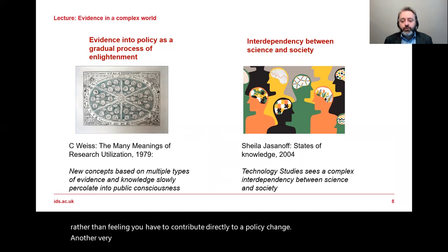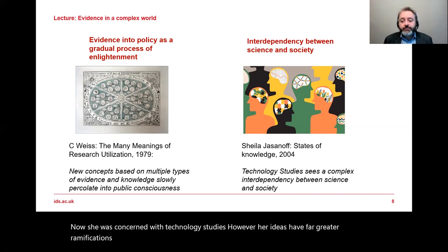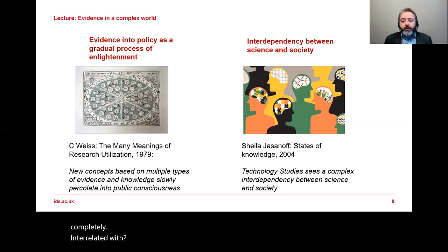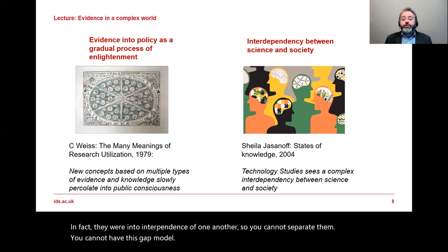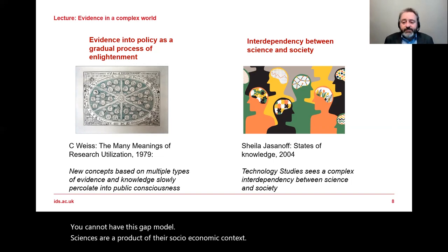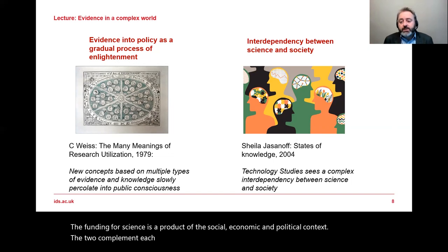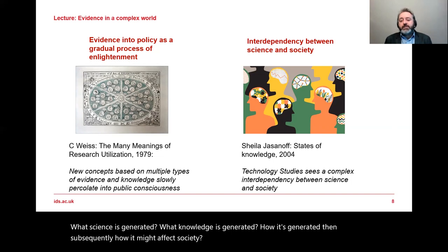Another very important contribution came from Sheila Jasanoff, somewhat more recently. She was concerned with technology studies, but her ideas have far greater ramifications beyond that field. She described very compellingly the way that science is completely interrelated with society and politics — in fact, they are interdependent, so you cannot separate them. You cannot have the gap model. Science is a product of its socioeconomic context; the funding for science is a product of the socioeconomic and political context. What knowledge is generated, how it's generated, and how it might affect society is part of a more complex system.